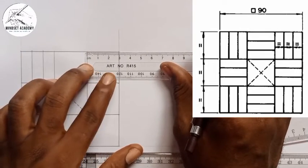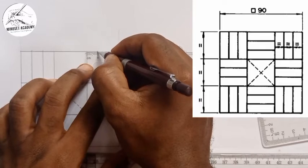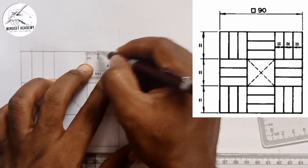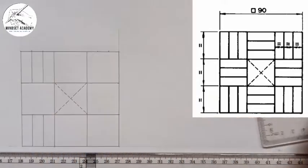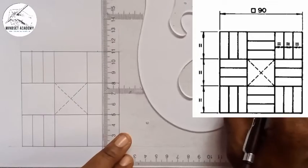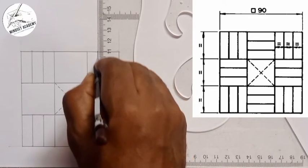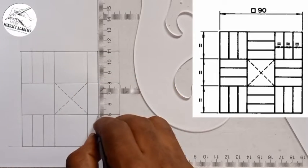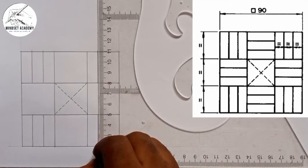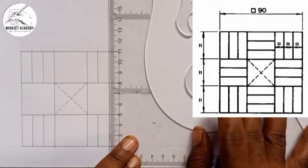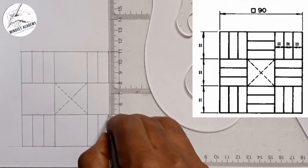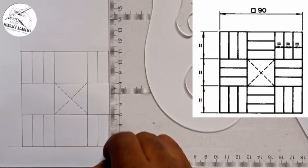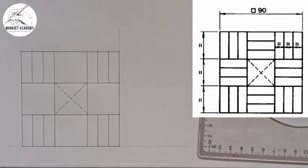I'll measure 30mm starting here: 10mm each — zero to 1 is 10, 1 to 2 is 10, 2 to 3 is another 10. I'll draw a line from this point straight down, leave a space, come here and do the same. Then come here, draw a line, and do the other side the same way.